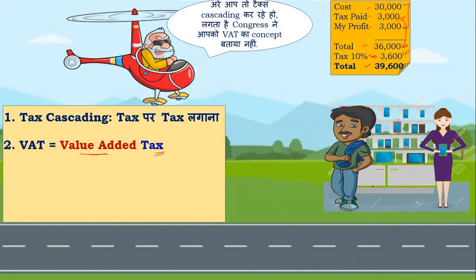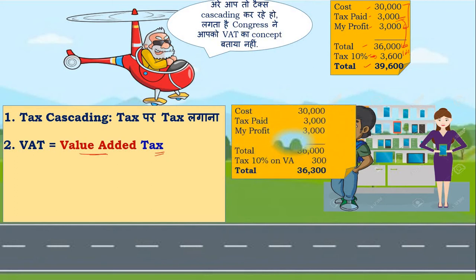If the retailer charges tax only on 3,000, the total tax becomes 300 rupees. Adding 300 to the total cost makes the mobile's total price 36,300 — which is exactly what the other shop is charging Modi ji.